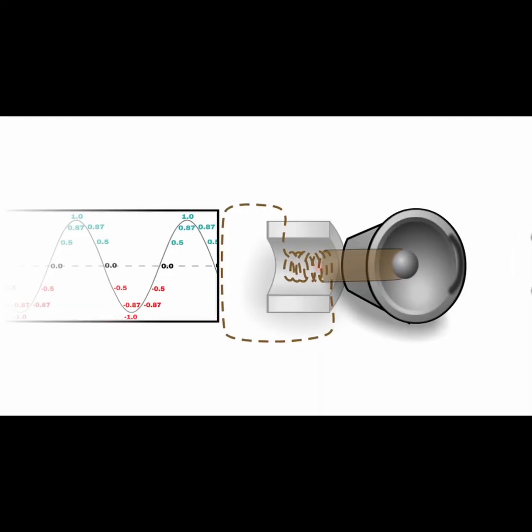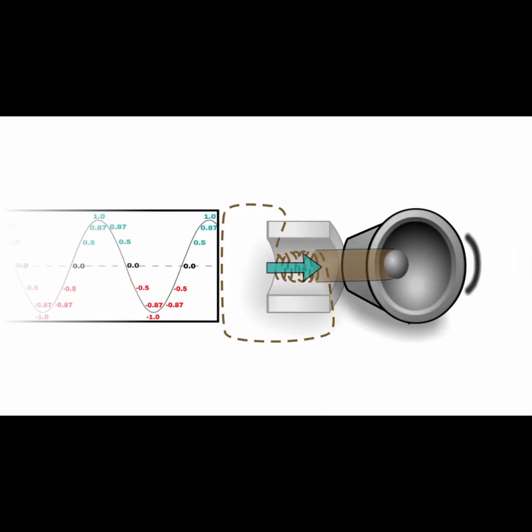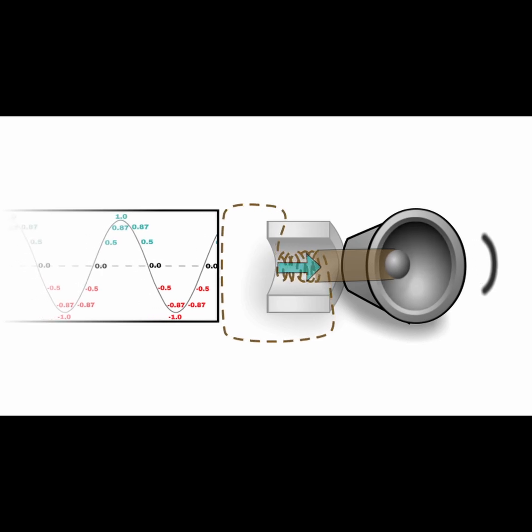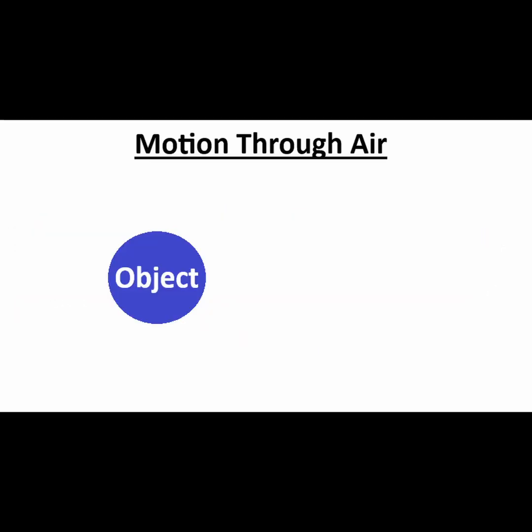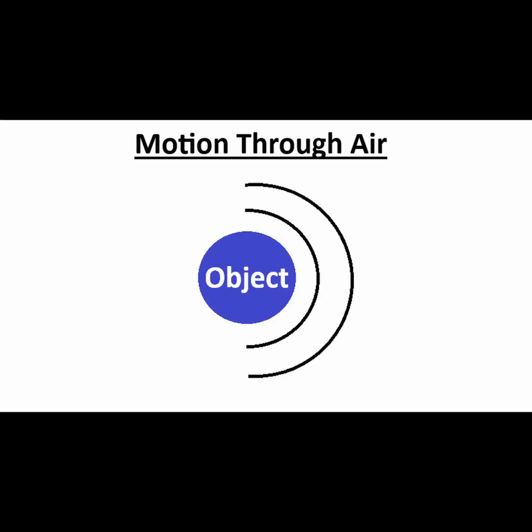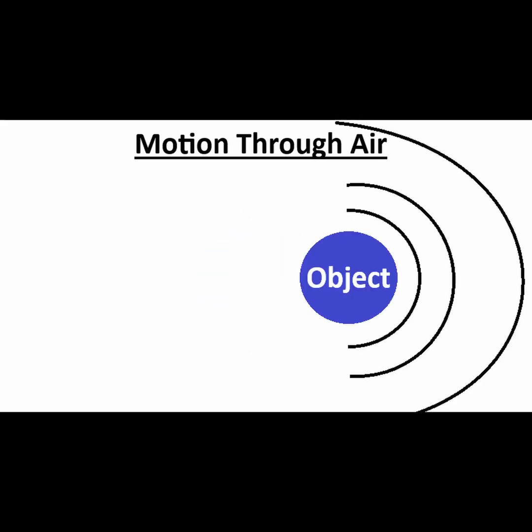Sound waves in air are longitudinal or compressional waves that cause particles to oscillate in the direction that the wave travels. If an object moves through the air, it causes a disturbance within the air which travels.